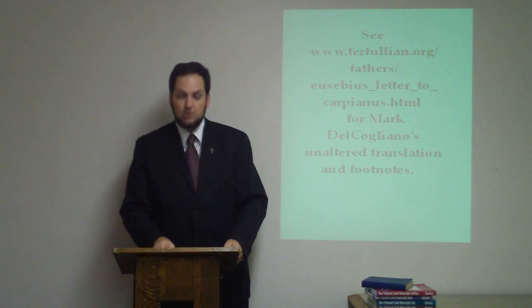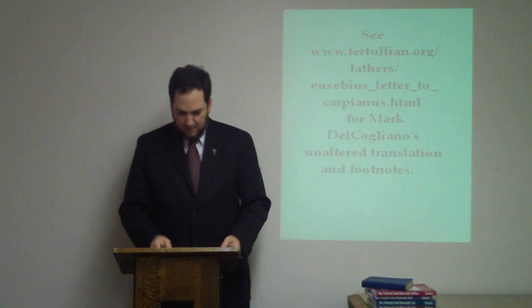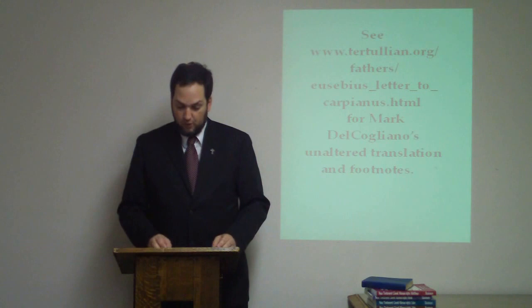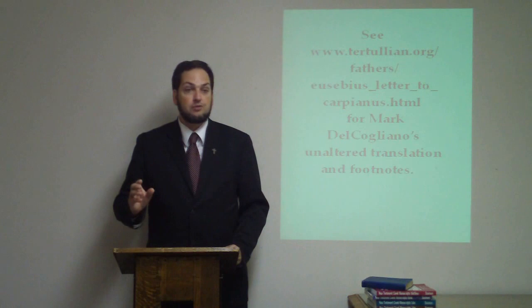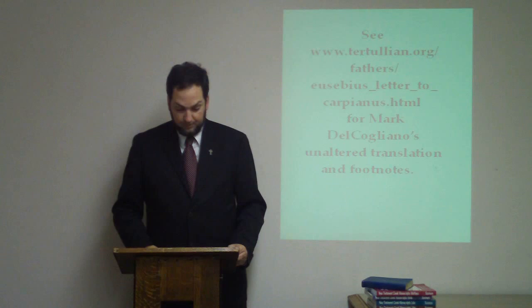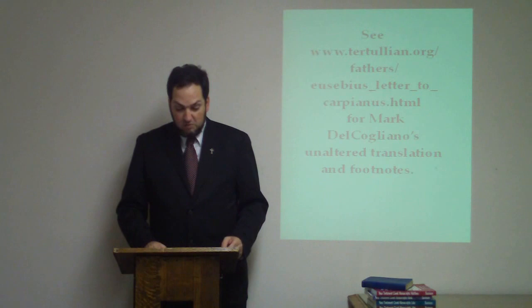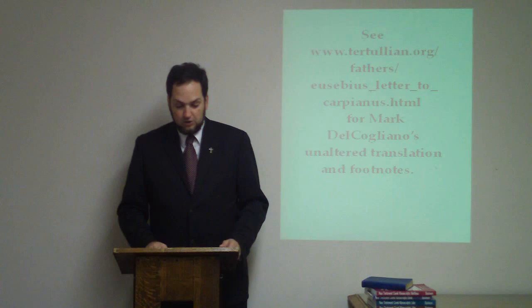Greetings from Eusebius to Carpian, his beloved brother in the Lord. Ammonius the Alexandrian, after exerting a great deal of energy and effort, has handed down to us a harmonized account of the four Gospels. Alongside the Gospel of Matthew, he placed the corresponding sections of the other three Gospels, but this had the inevitable result of ruining their sequential order. Keeping both the body and the sequence of the Gospels completely intact, in order that you may be able to know where each evangelist wrote passages in which they were led by love of truth to speak about the same things, I have drawn up a total of ten tables according to another system, using the data from Ammonius.